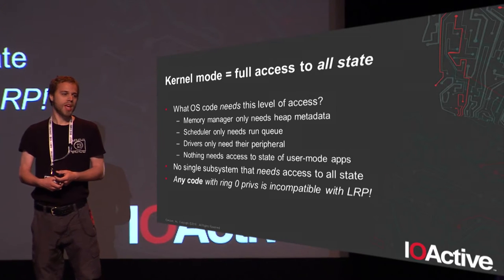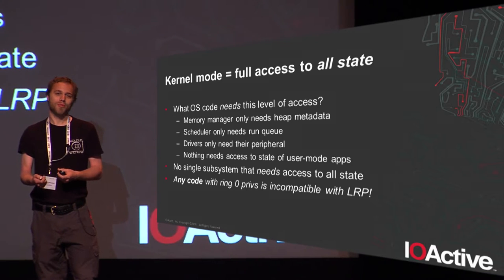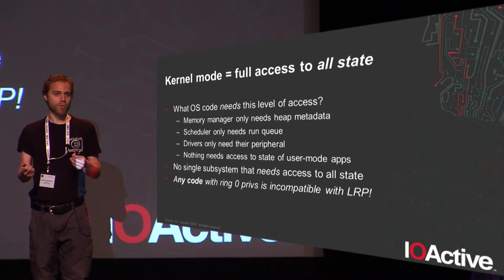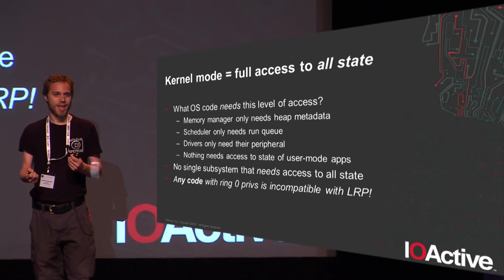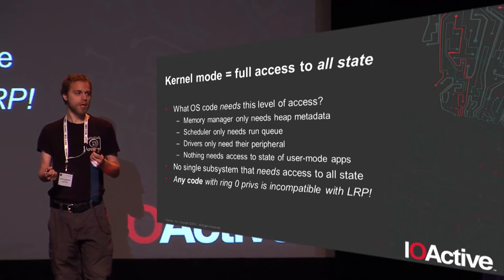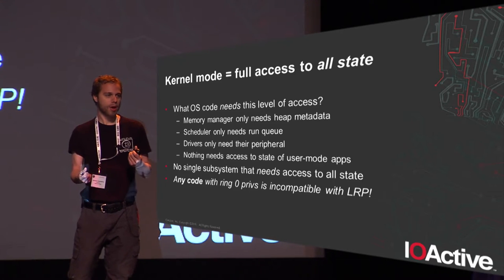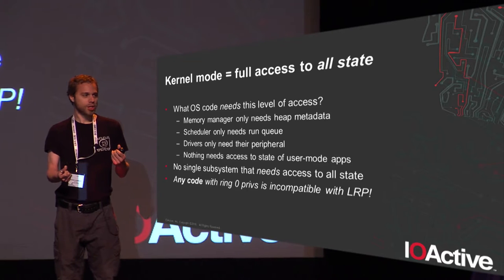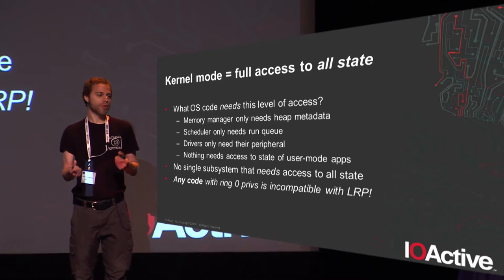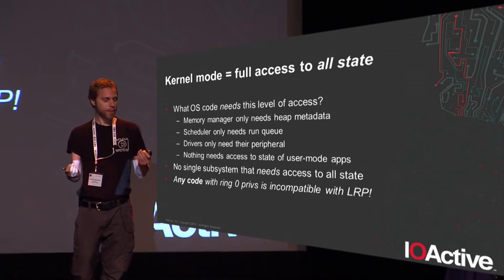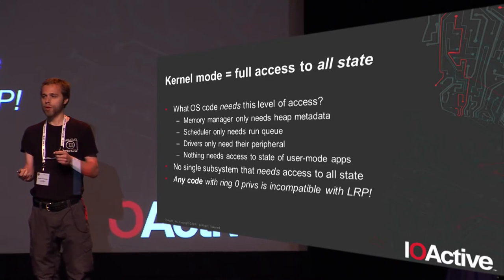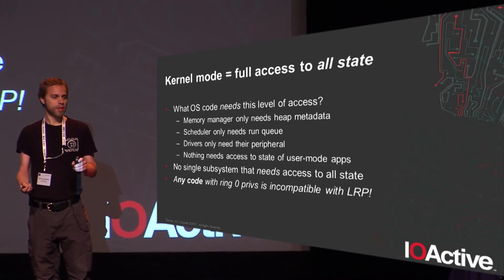I'm going to begin by making a somewhat unusual and radical claim, which is why my talk is in the New Direction section: having any software whatsoever running in ring zero violates least required privilege. If you think about all the different subsystems in a modern kernel, which one needs the ability to talk to private registers of hardware, to read stack data from a user space application, to modify page tables of user space applications, to write to arbitrary data on disk? Collectively, the OS needs all those capabilities, but no one subsystem needs all of that. So the conclusion is that having any software running in ring zero violates least required privilege.